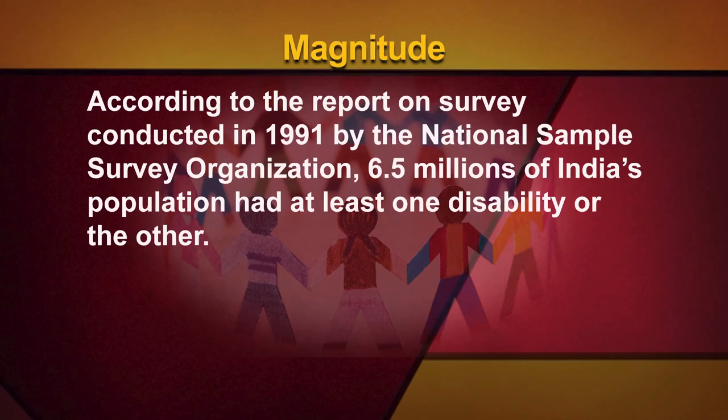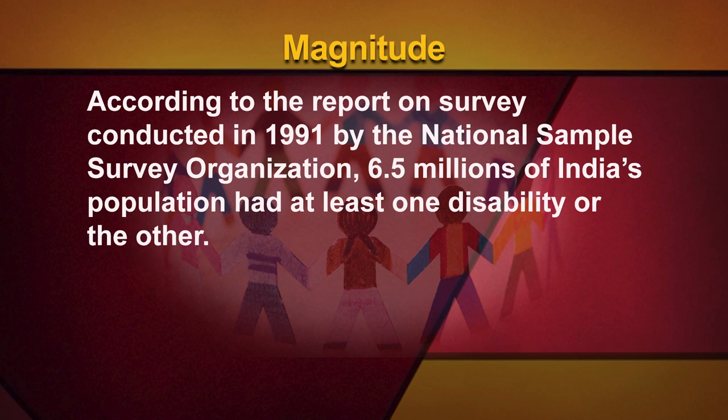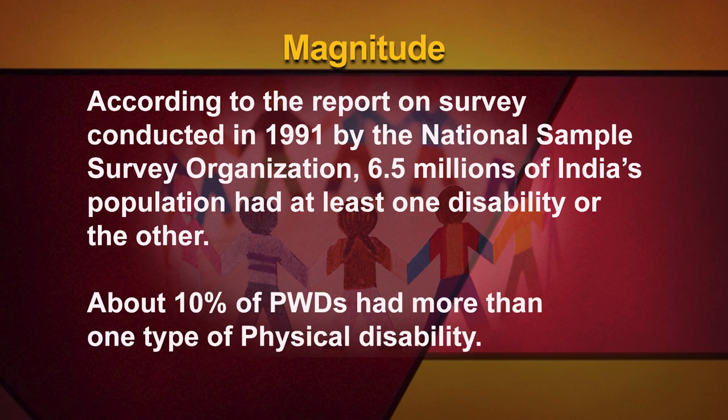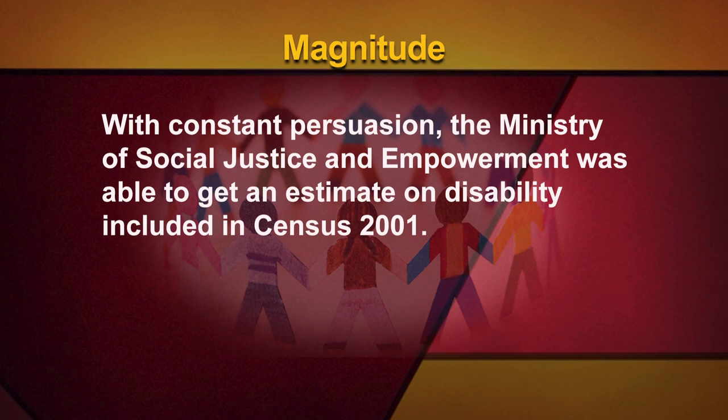According to the report on a survey conducted in 1991 by the National Sample Survey Organization, 6.5 million of India's population had at least one disability or another. About 10% of the PWDs had more than one type of physical disability. With constant persuasion, the Ministry of Social Justice and Empowerment was able to get an estimate on disability included in Census 2001.